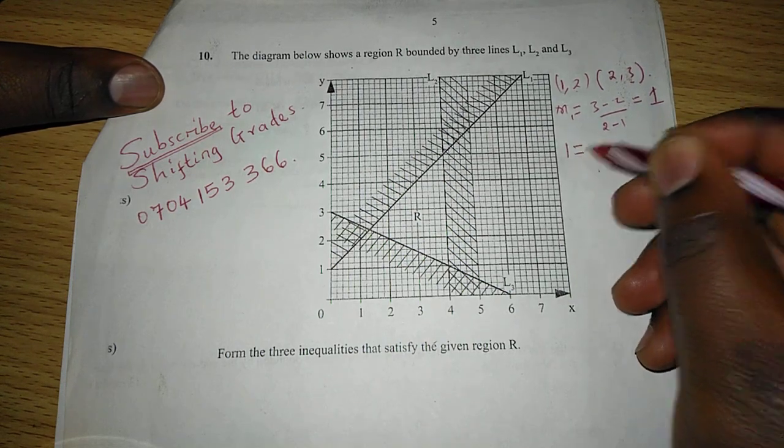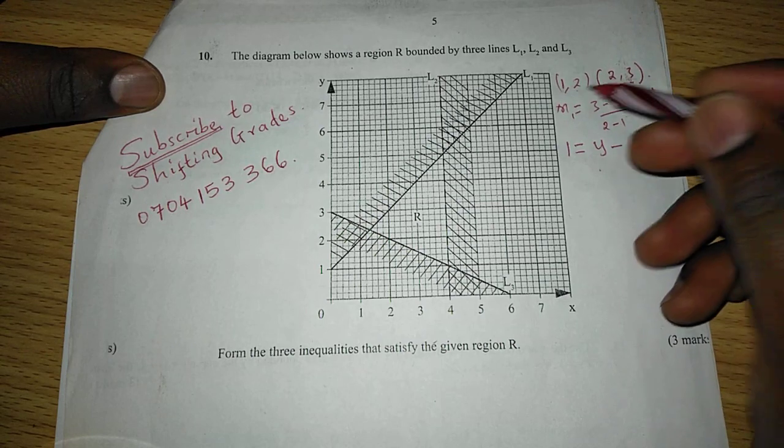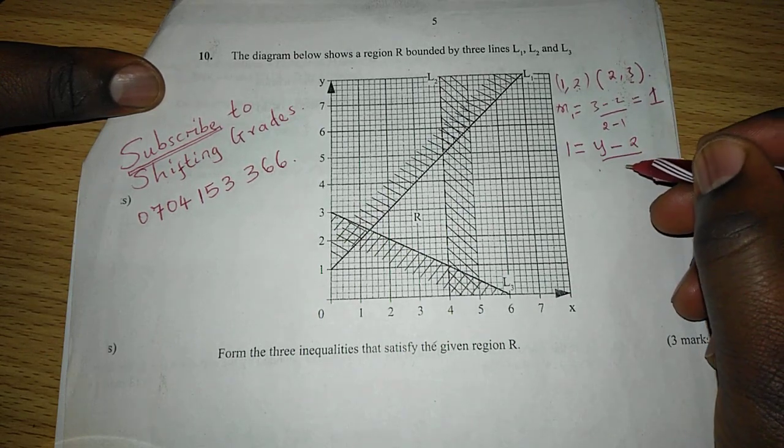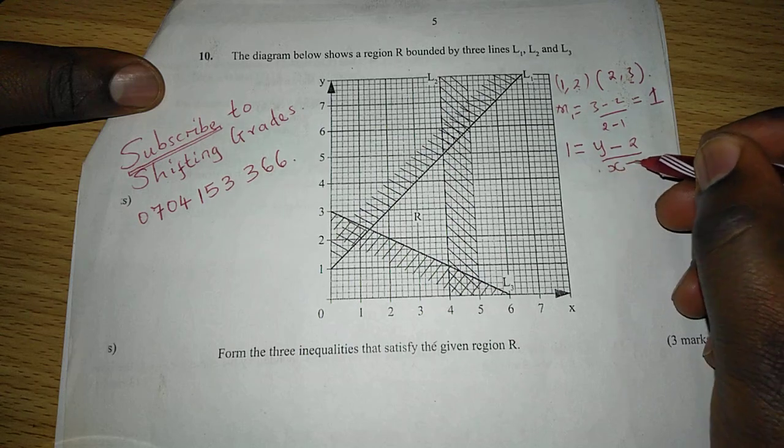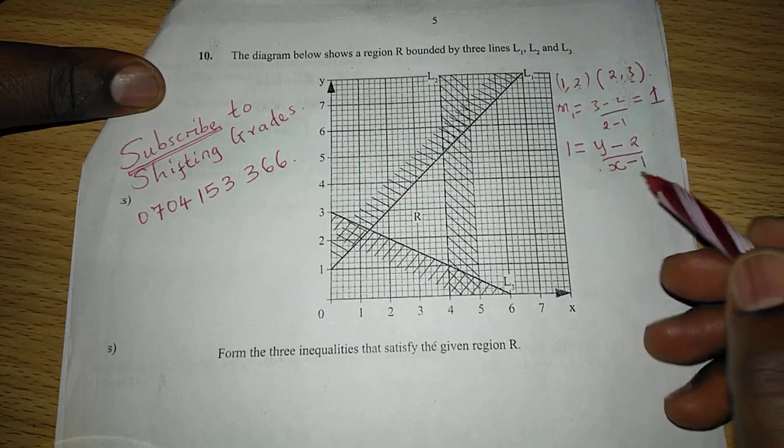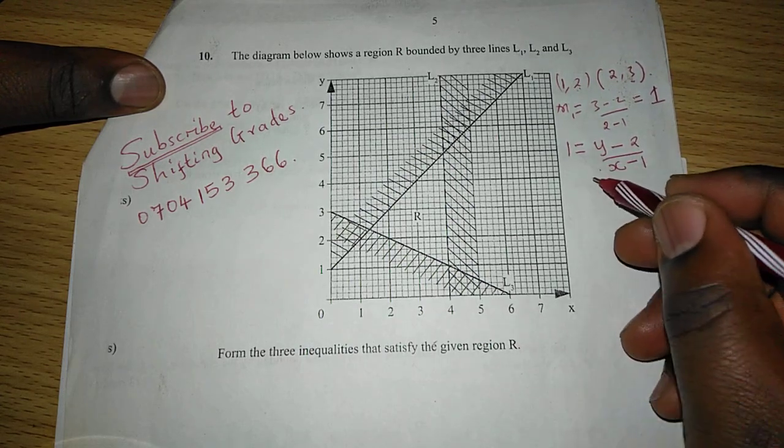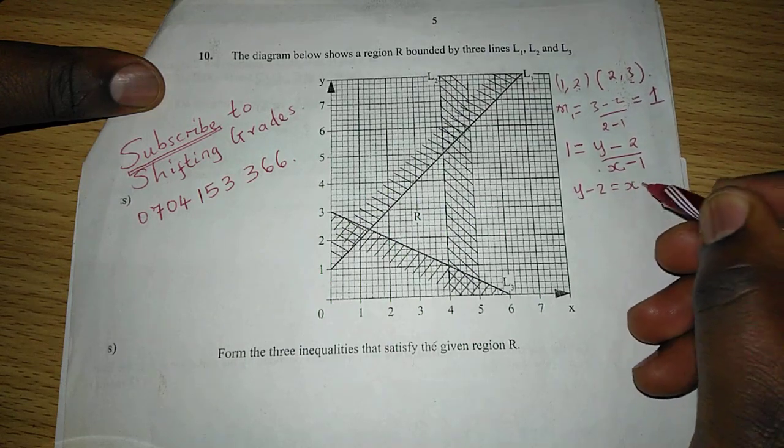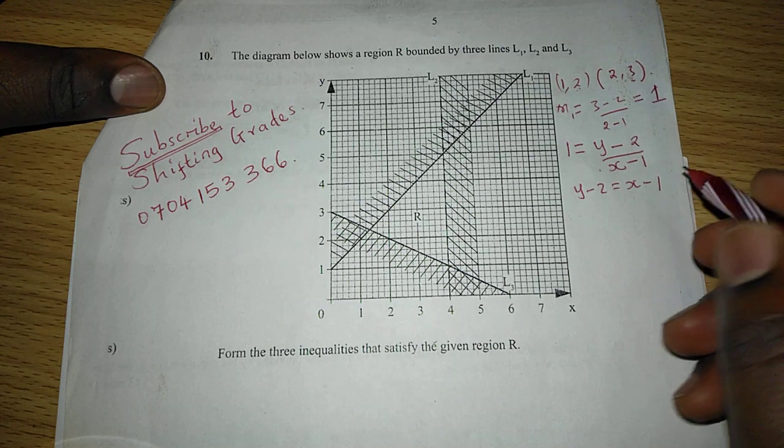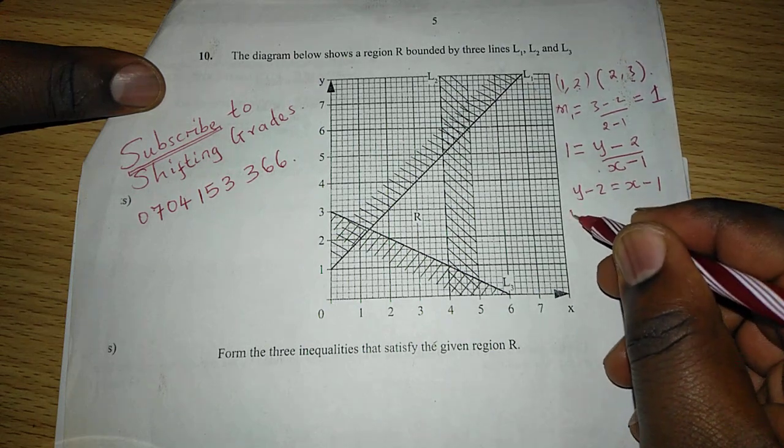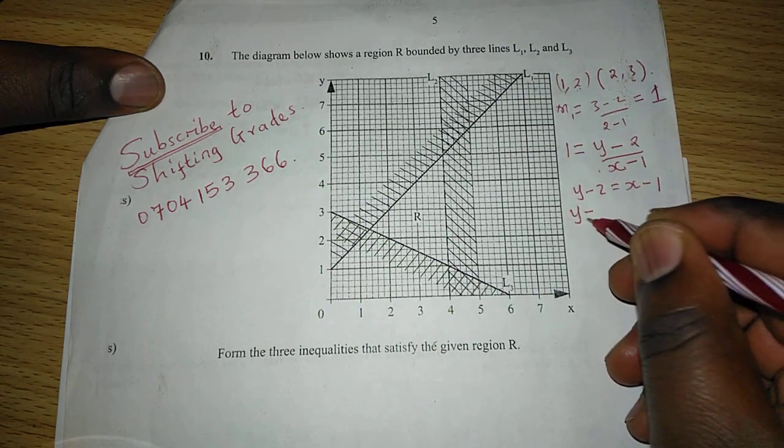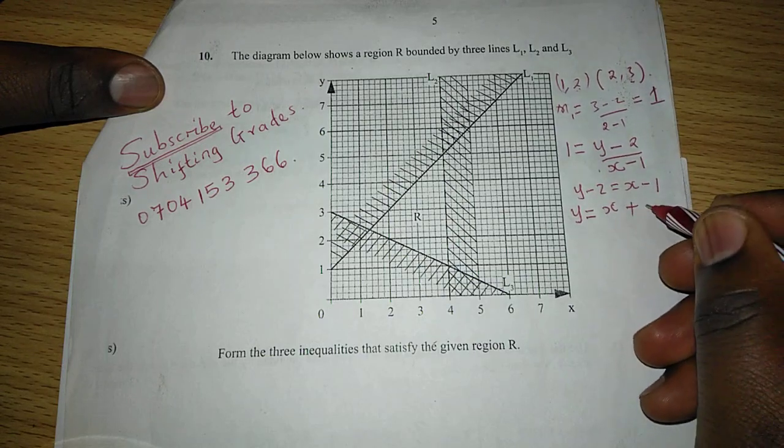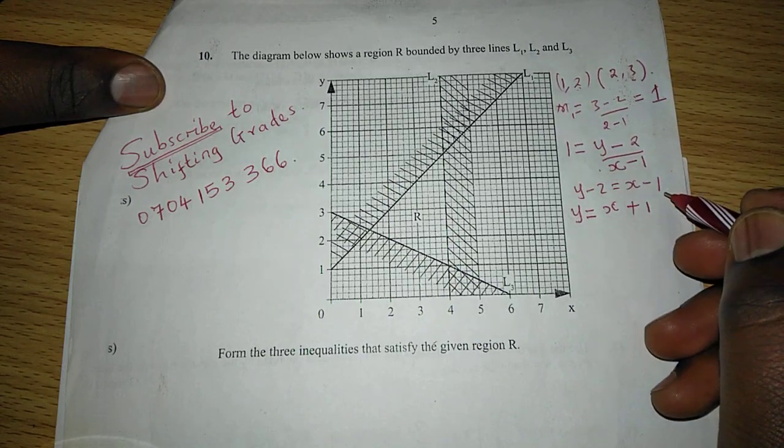The gradient 1 is given by Y minus 2 divided by X minus 1. So when we cross multiply here, we shall have Y minus 2 equals to X minus 1. And rearranging this, we have Y equals to X plus 1 when we take 2 to the other side.